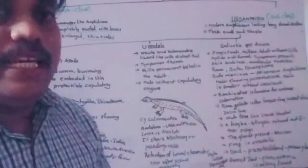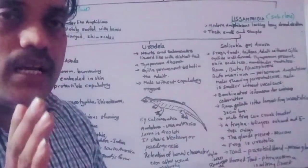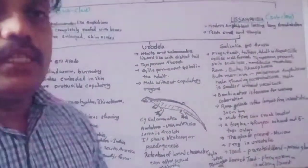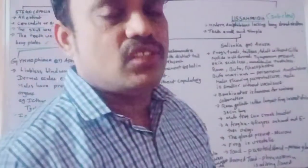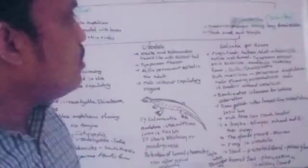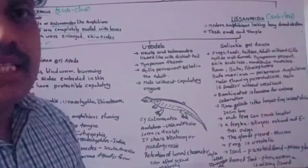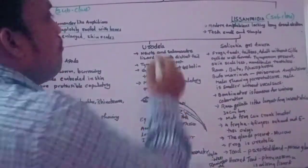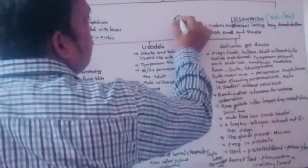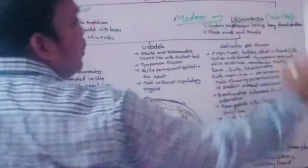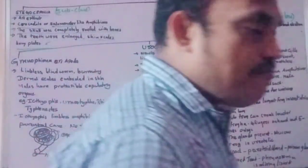All Stegocephalia are extinct — they looked like crocodile-like and salamander-like structures. The second subclass is Lissamphibia, which are the modern amphibians. Whatever amphibians we see today are totally Lissamphibia.